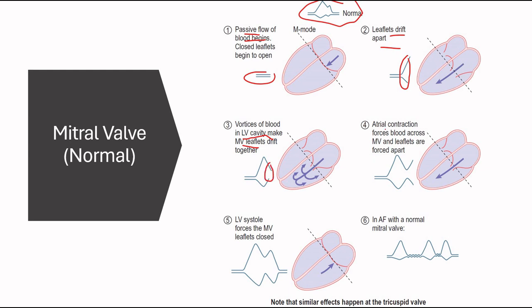So we see this divot down here, as the leaflets come back closer, and during atrial contraction, it forces the blood through the mitral valve and into the left ventricle, which causes the leaflet to open back up again, as you can see here. And during LV systole, it forces the mitral valve leaflets to close back up, and then you see this leaflets coming closer together, and then you see these leaflets are closed.